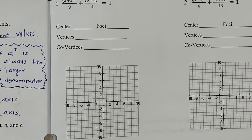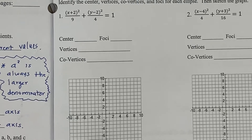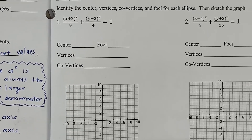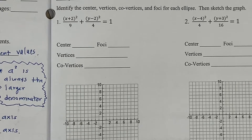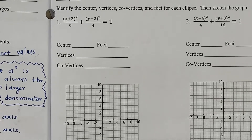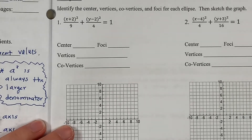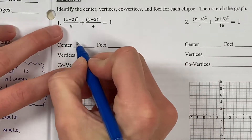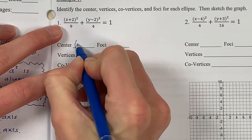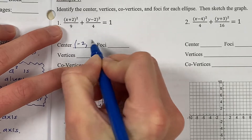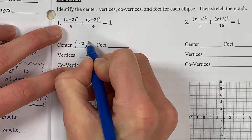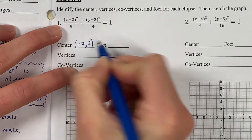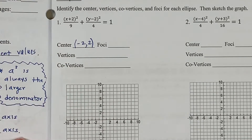When we graph an ellipse, the first thing we're going to find is the center. The center of an ellipse is very similar to finding the vertex of a parabola. The center is (h, k), where h is the value with x and k is the value with y. Since I have x + 2, my h value is negative 2. Since I have y - 2, my k value is 2. So the center of this ellipse is (-2, 2).